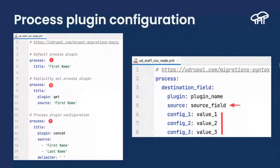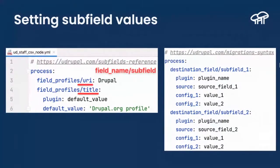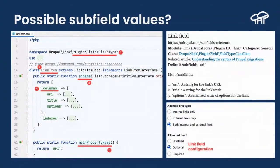You need to know about process plugin configuration — how they work, what configuration options they may have, how to specify the source, and what the many different source plugins are that are available. Some come with Drupal core, others are available in contributed modules like Migrate Plus. You need to have some familiarity with all of that because these are the tools you're going to be using when writing custom migrations. You also need to be familiar with how to set subfields.